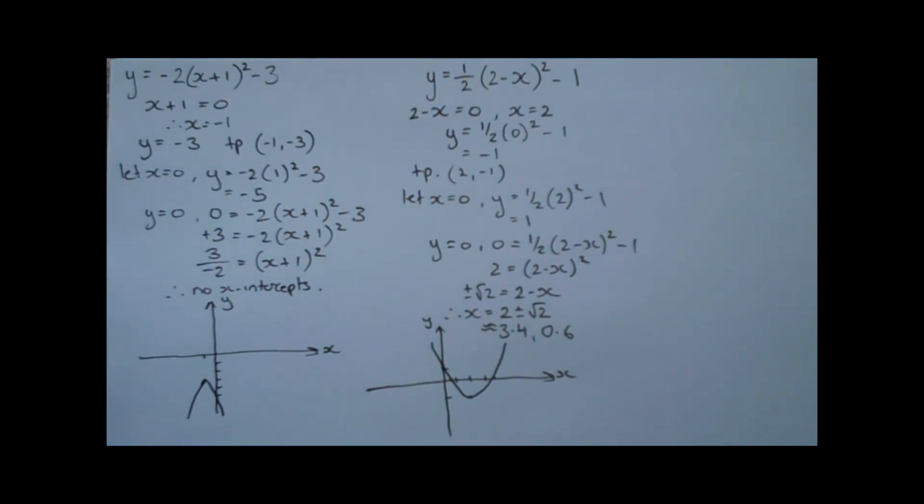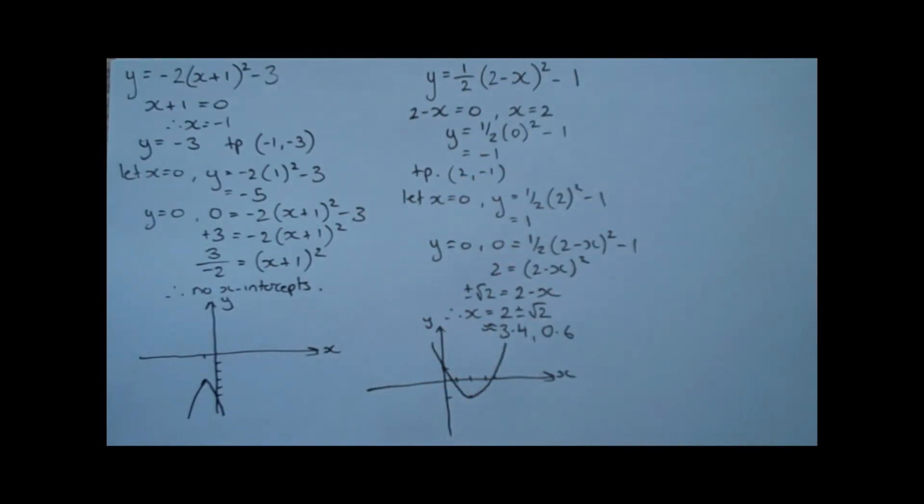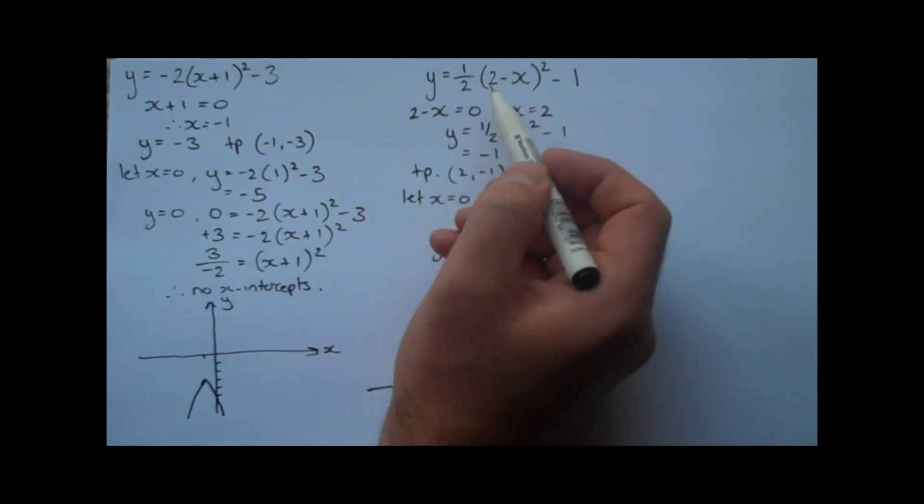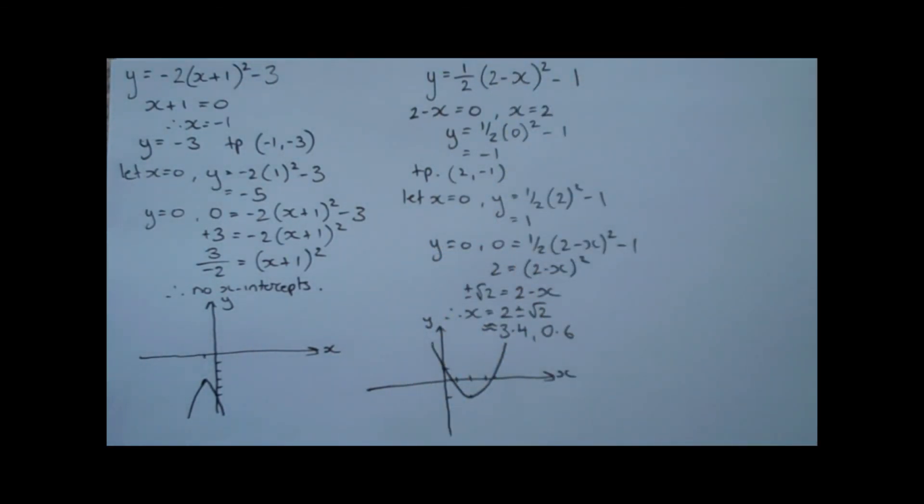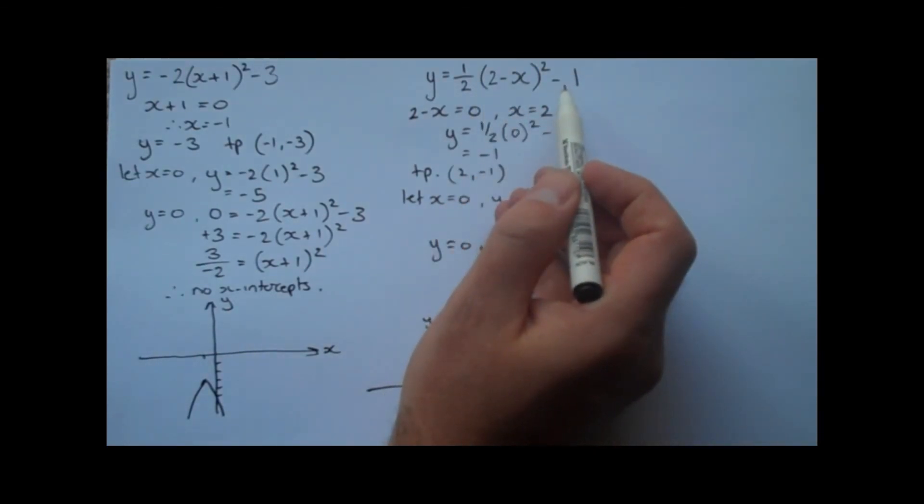And if we're going to state the transformations that have taken place from the basic parabola x², we would say that it's got a dilation of a factor of a half parallel to the y-axis. It's got a reflection in the y-axis because the negative is inside the bracket here. It has had a horizontal translation of two units to the right or in the positive x direction. And it has a vertical translation of one unit down or in the negative y direction.